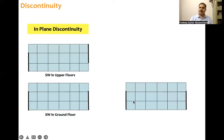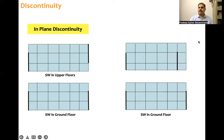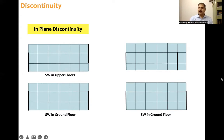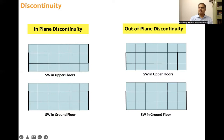For completeness, let us also look at out-of-plane discontinuity. Structural walls are in the ground floor — when the wall is horizontally shifted to an inner bay (not the extreme right-side bay), that is out-of-plane discontinuity. Here, upper floors have the structural wall on one grid while the ground floor has it on the extreme grid. That is the difference between in-plane and out-of-plane discontinuity. Out-of-plane discontinuity is covered in another short lecture.